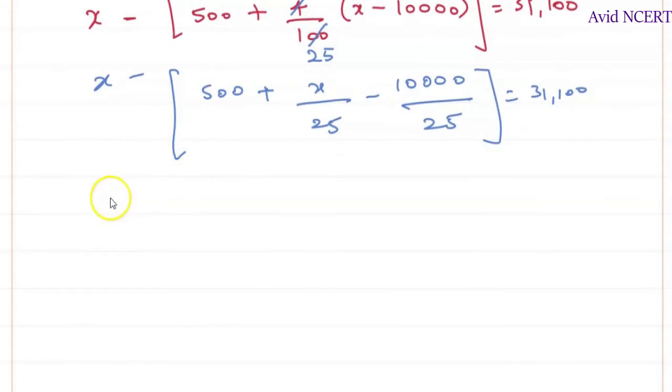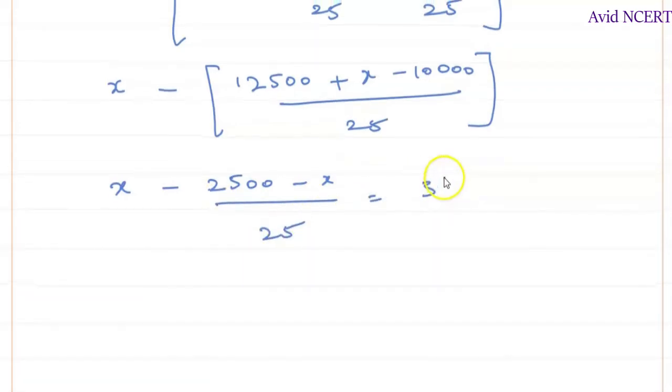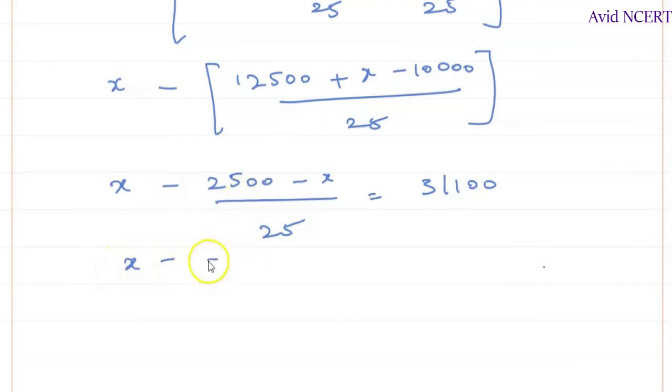So it is x minus, 25 times 500 is 12,500, no wait, it's 500 plus x minus 10,000 divided by 25. So which is x minus 2,500 minus, no, 12,500 minus 10,000 is 2,500 divided by 25 minus x by 25 equals 31,100.